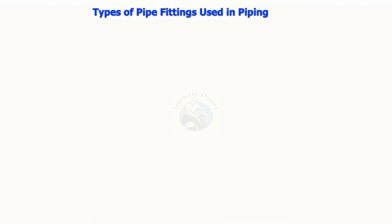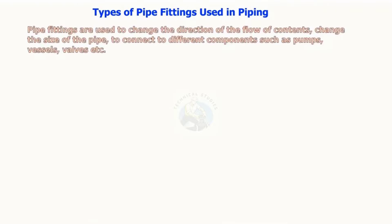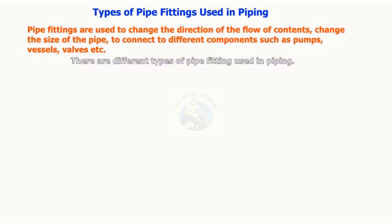Types of pipe fittings used in piping. Pipe fittings are used to change the direction of the flow of contents, change the size of the pipe, and to connect to different components such as pumps, vessels, valves, etc. There are different types of fittings used in piping.